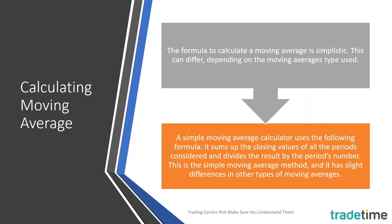The formula to calculate a moving average is simplistic, though it can differ depending on the type used. A simple moving average sums up the closing values of all the periods being considered — one time frame per bar. So if you're looking at a one-hour chart, each period is one hour. If we're using a 10-period moving average on a one-hour chart, we go back for the last 10 hours, take the close of each candlestick, add them together and divide by 10.